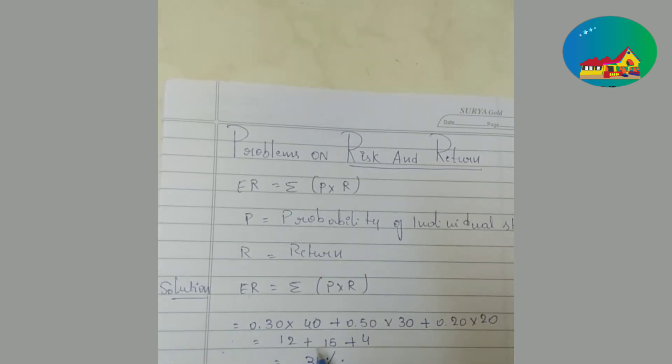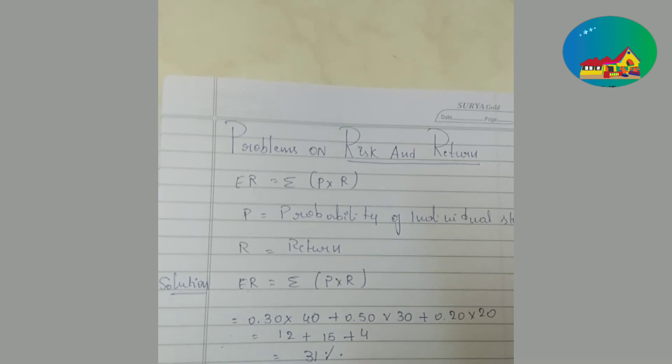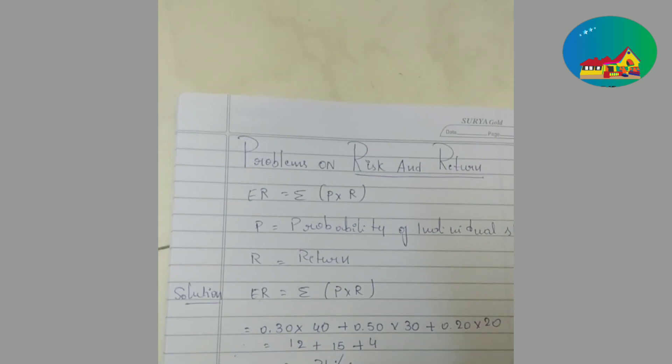When we add all three, 12 plus 15 plus 4 will get 31. We have to express expected rate of return in percentage, so we will get 31 percent in this first problem solution.